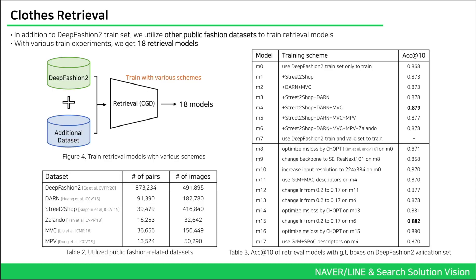The CGD framework and combined loss functions are depicted in Figure 3. Unlike the detection models, we utilize other public fashion datasets to train our retrieval models. We summarize the utilized datasets on Table 2, and through various experiments, we obtained 18 retrieval models and summarize the top-10 accuracy with various training configurations on Table 3.